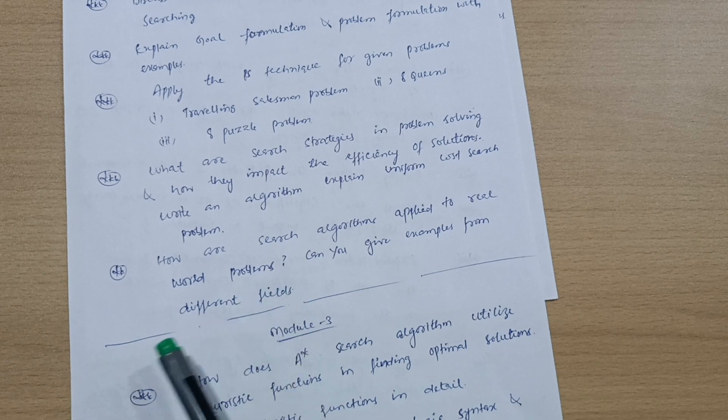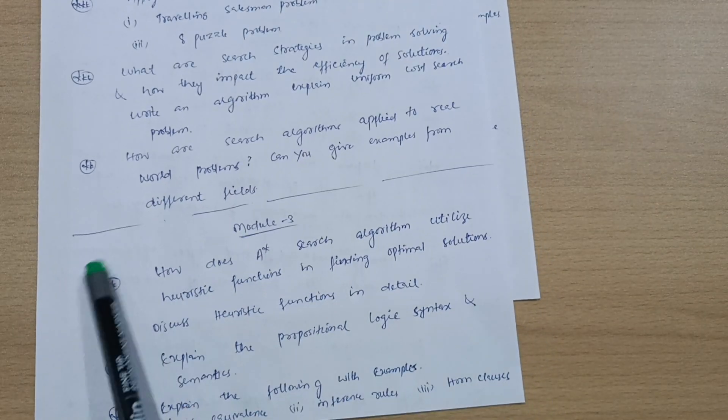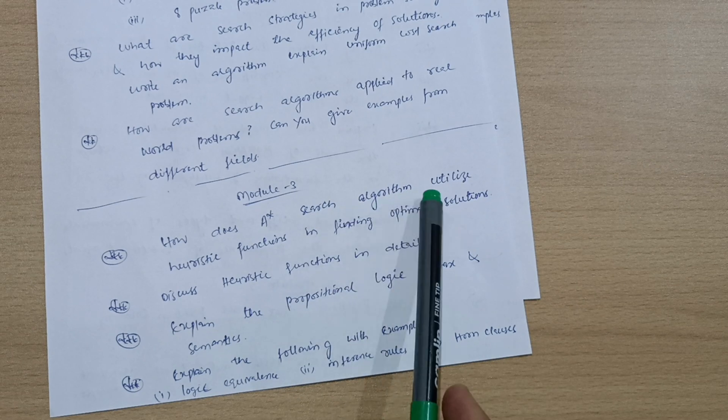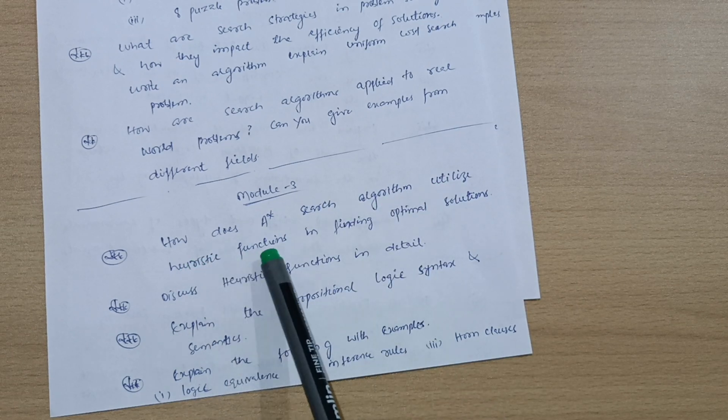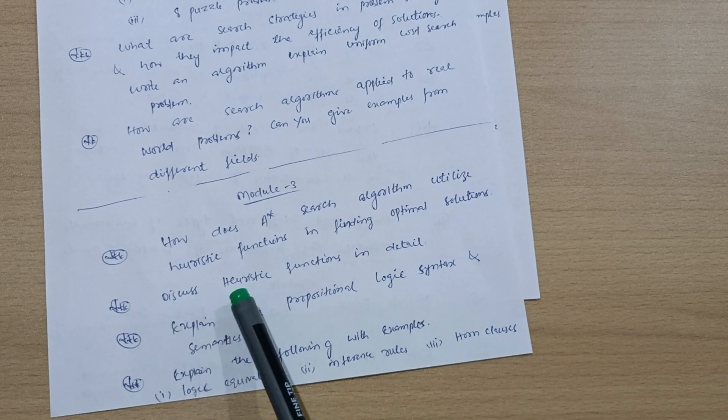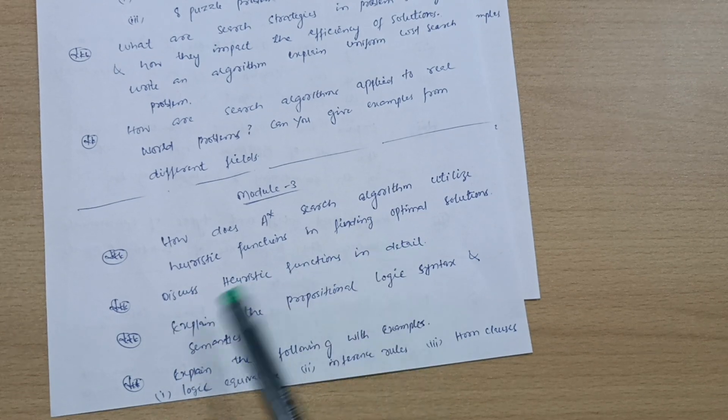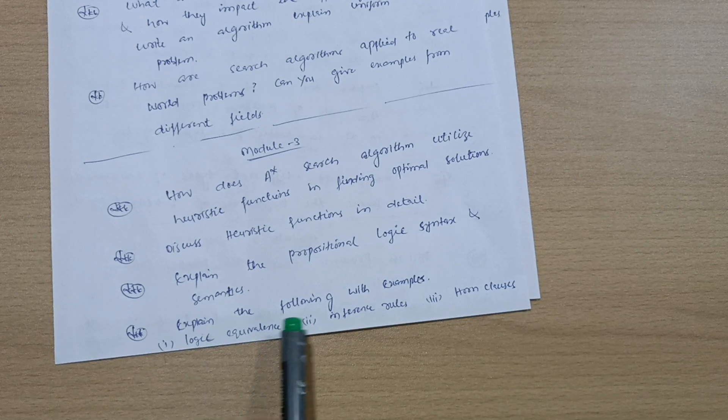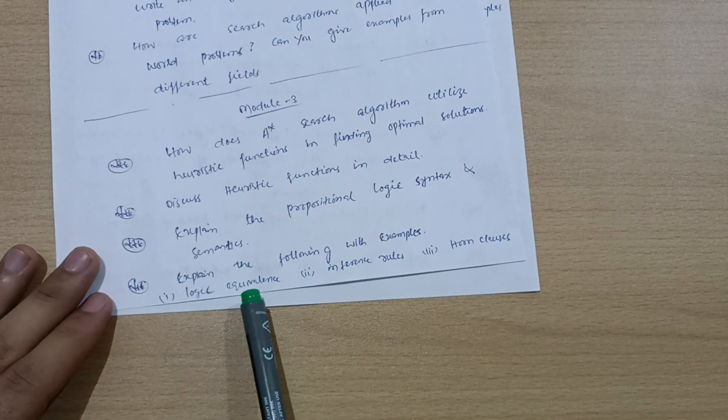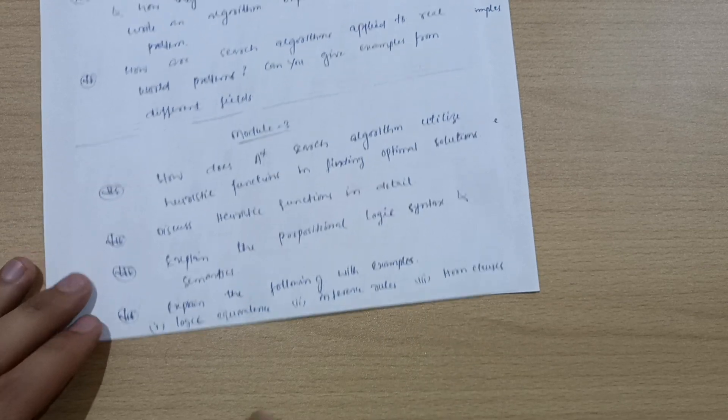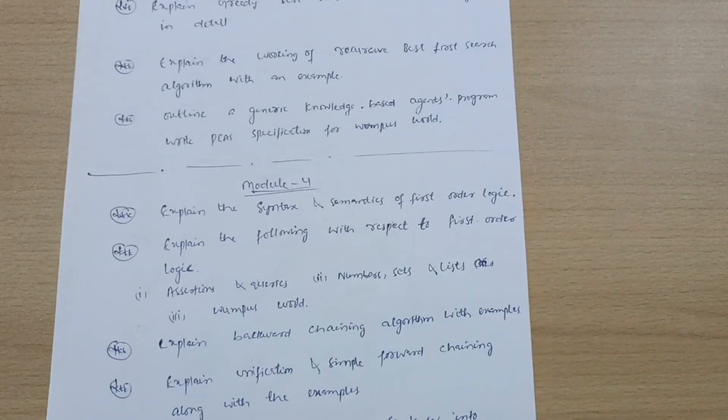This is all about Module 2. Now let me discuss Module 3: How does A* search algorithm utilize heuristic functions in finding optimal solutions? Discuss heuristic functions in detail. Explain the propositional logic syntax and semantics. Expand the following with examples: logic equivalence, inference rules, and Horn clauses.